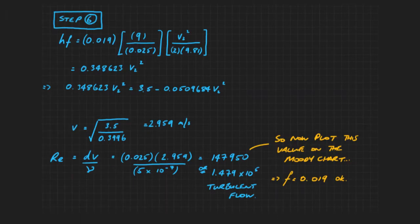We now calculate a new value for HF using the new value of the friction factor that we found at 0.019. We compare the two HF equations again, get a value for the velocity. In this case, 2.959. We can now calculate the Reynolds number. And we can see that this is still in turbulent flow.